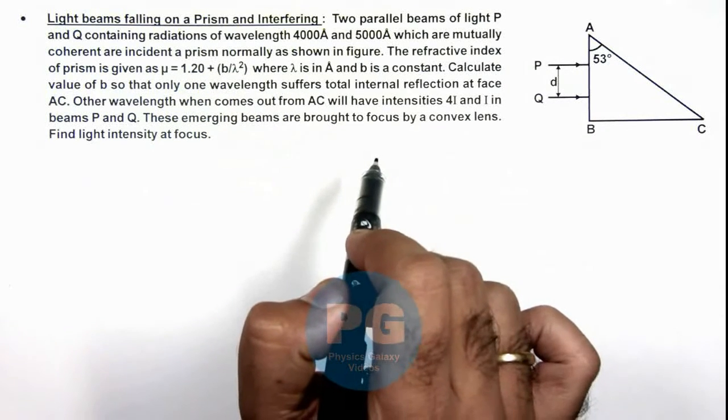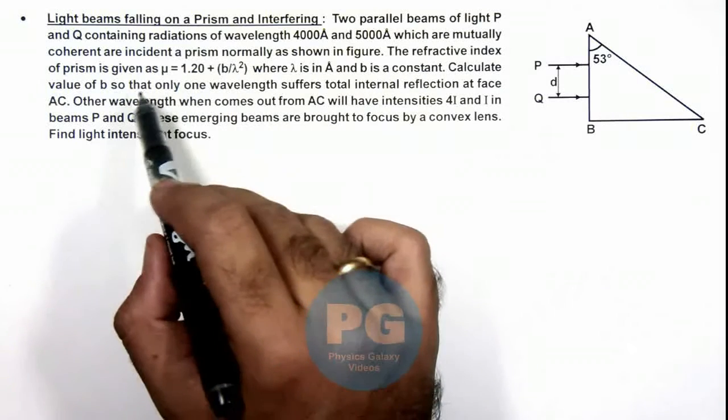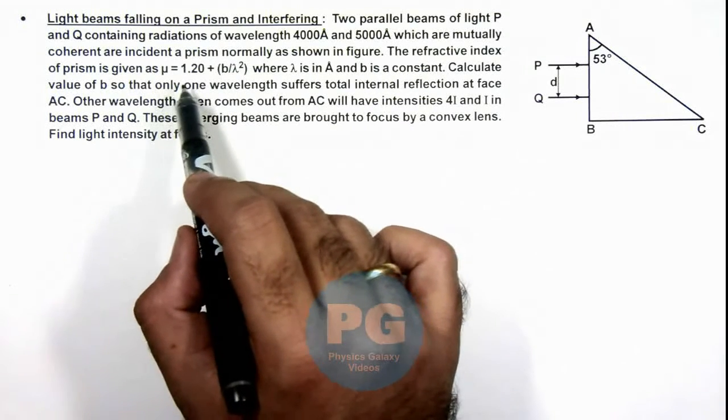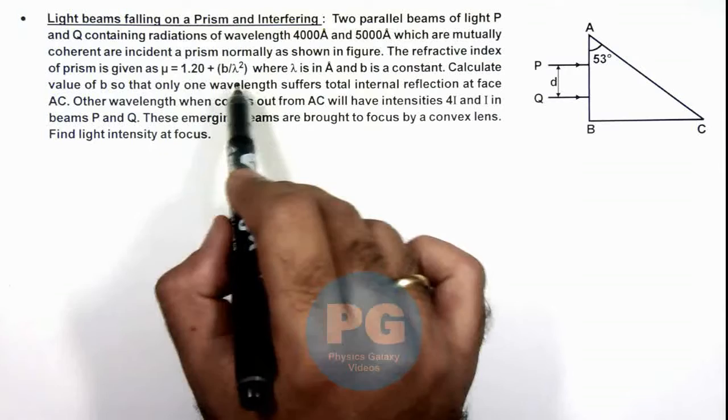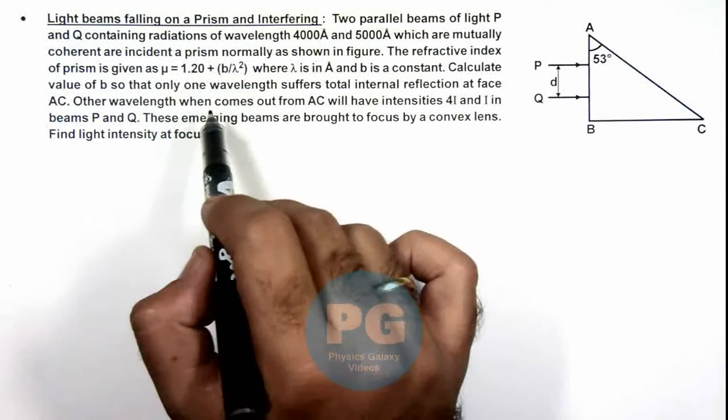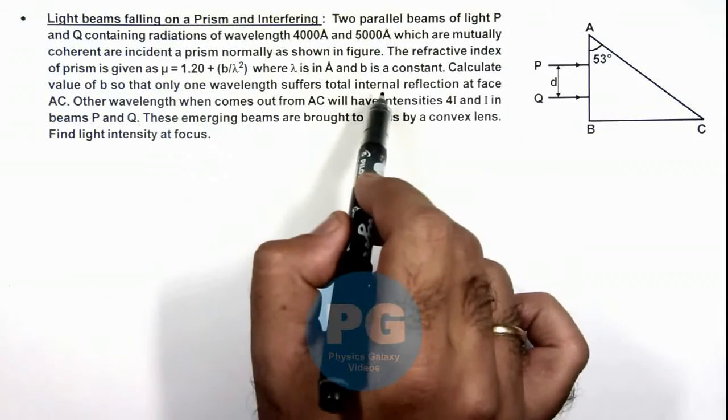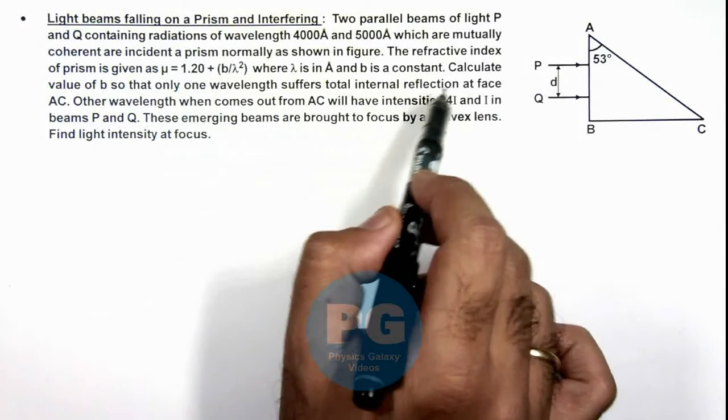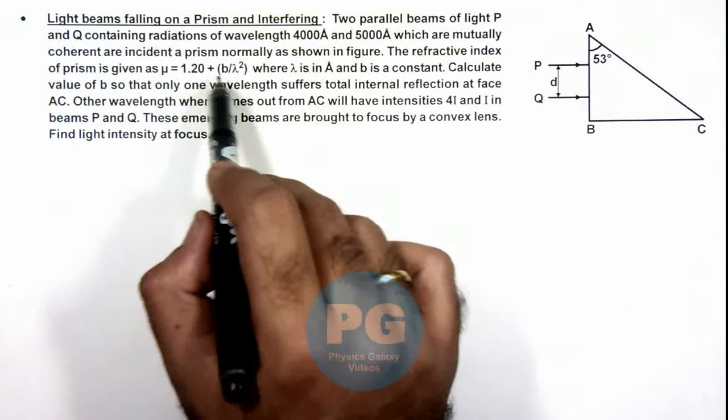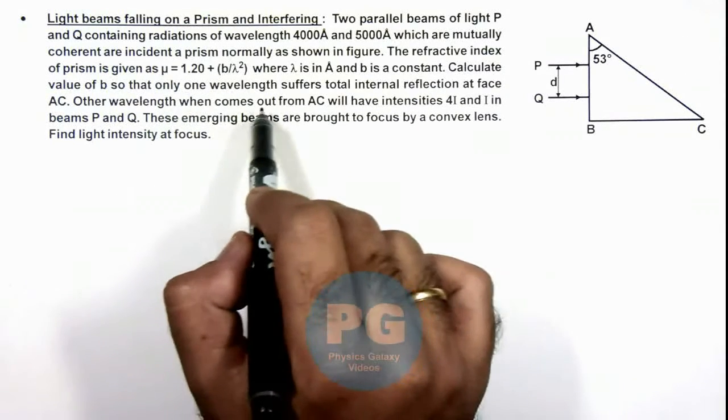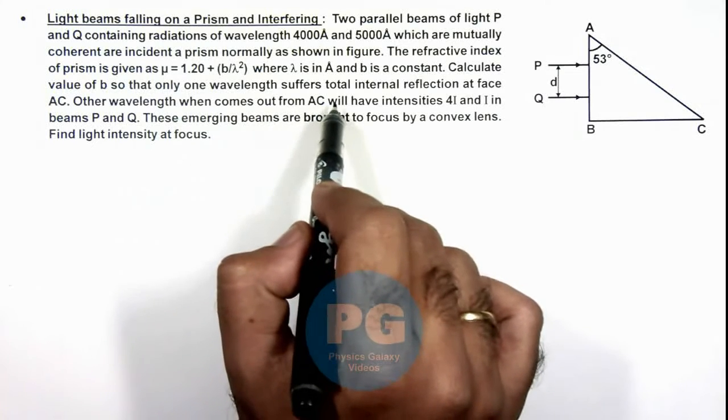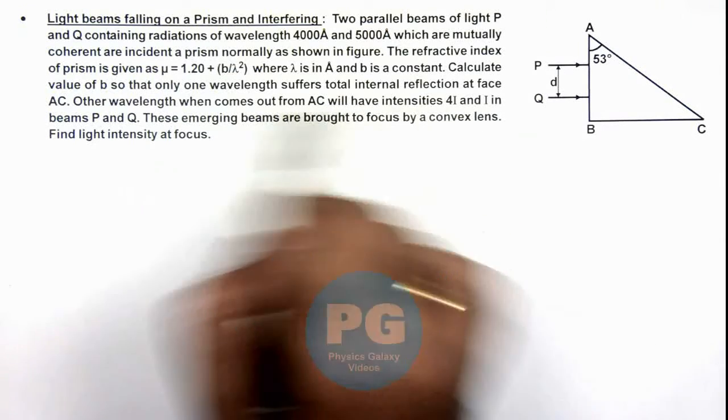Now, we are given that the refractive index of prism is given as μ = 1.2 + b/λ² which we have studied as Cauchy's relation, where λ is in angstrom and b is a constant. We are required to calculate the value of b, the constant here, so that only one wavelength suffers total internal reflection at face AC.